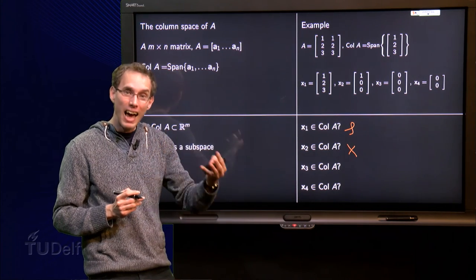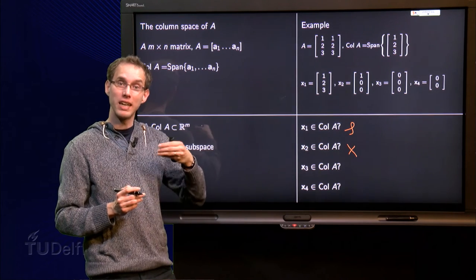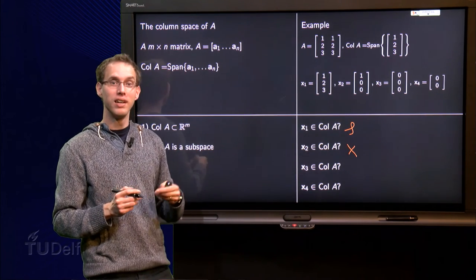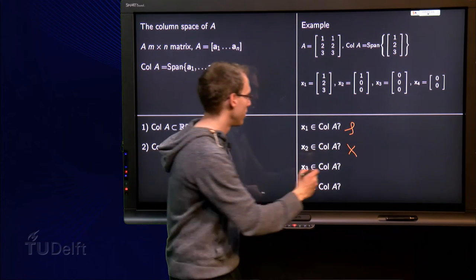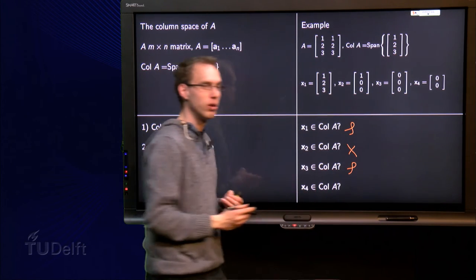Because you are allowed to take any multiple, so you can also take 0 times [1, 2, 3]. And then we get [0, 0, 0]. So x3 is in the column space of A.